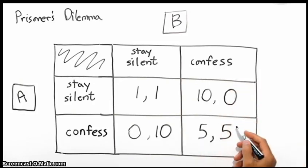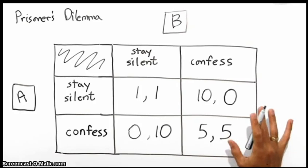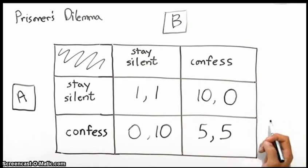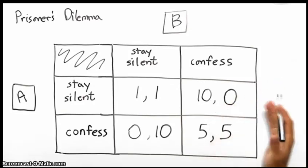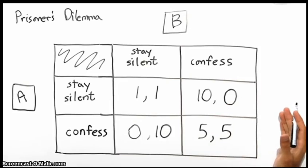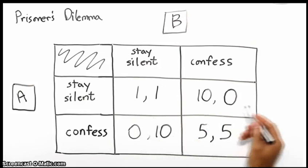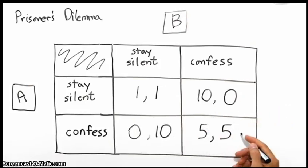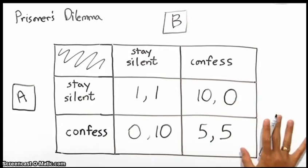But the pressure on them is to confess, because the likelihood of one of them confessing and the other not is quite high. And in that case, if they do not confess and the other does, they will spend 10 years in prison. That's a long time to be in prison. Whereas if they confess and the other doesn't, they'll go free. But if they both confess, they'll get five years in prison. The result is that it's safer to confess.